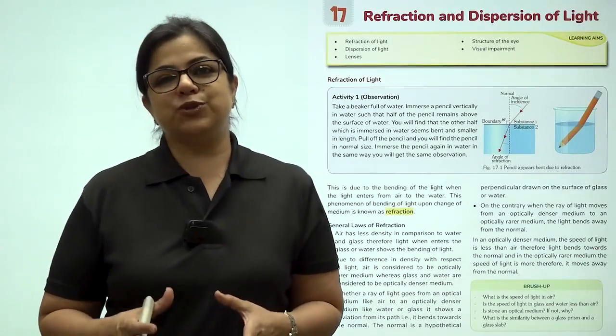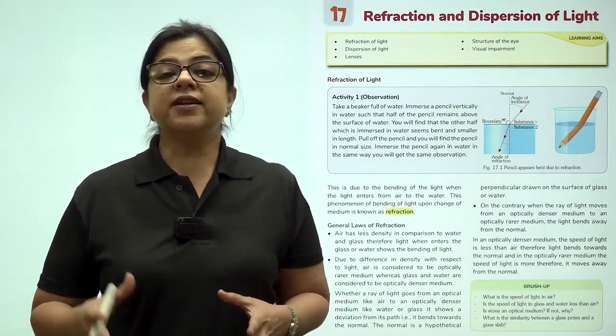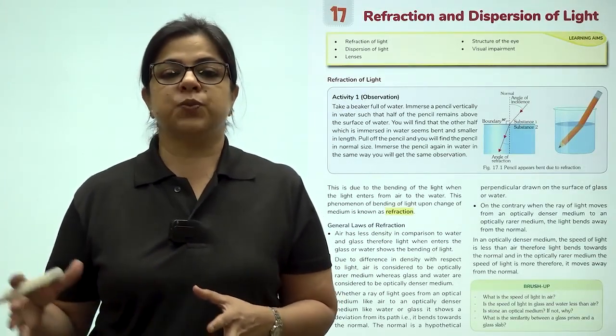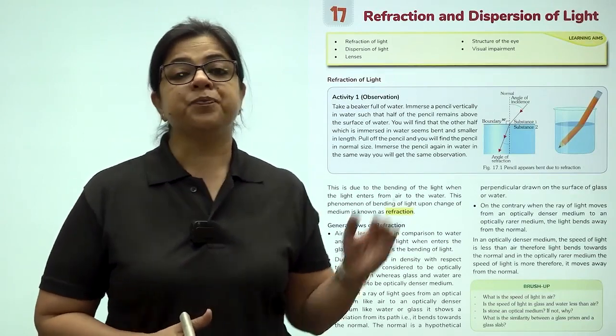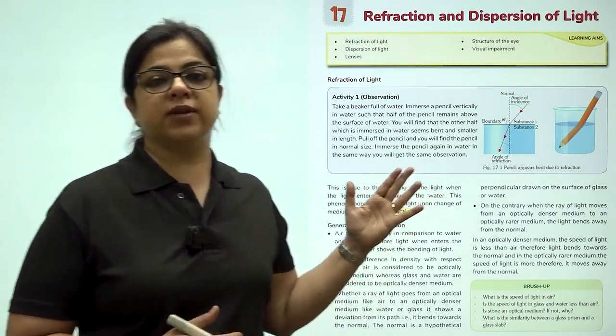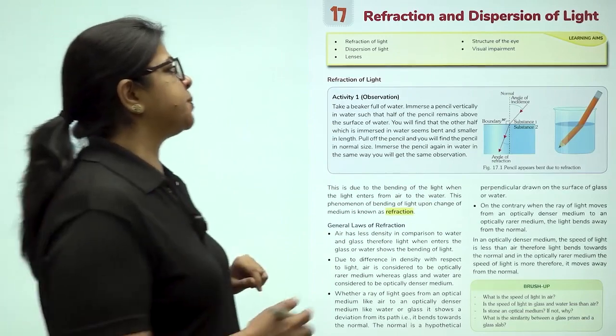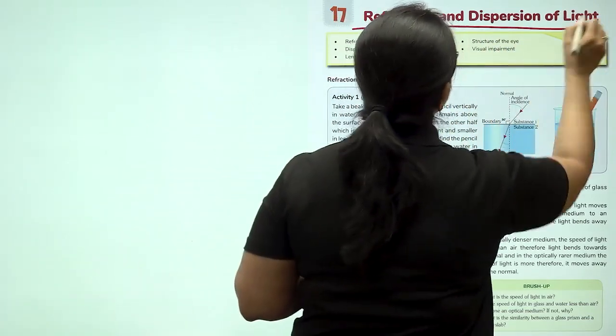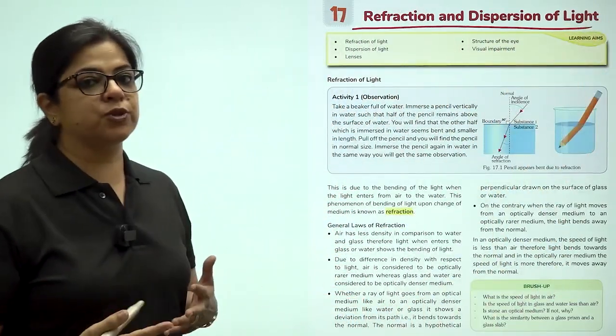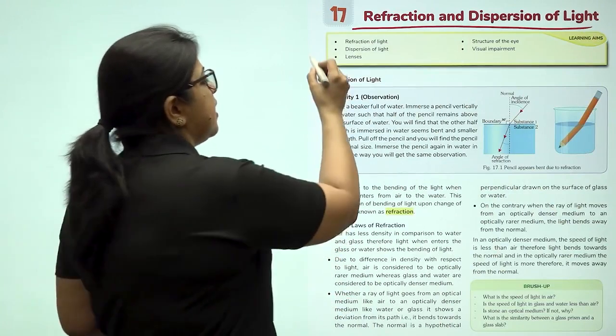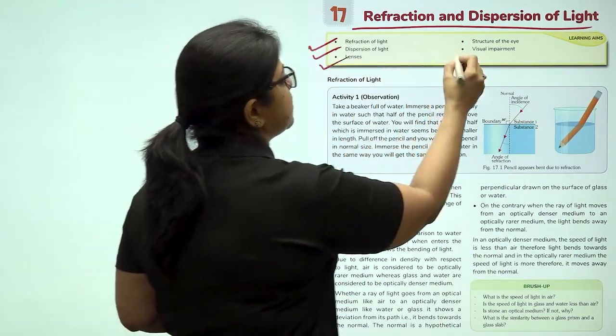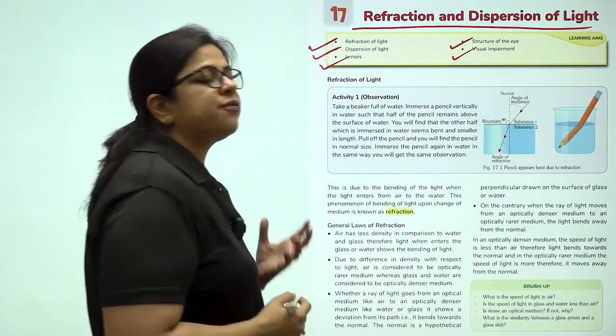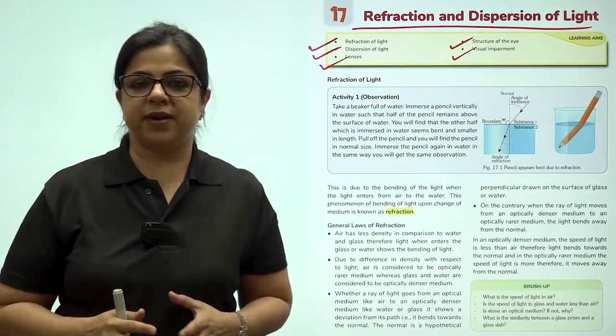Hello children and welcome to the session today. In continuation of what we learned in the previous session, we are going to talk more about light. In this chapter, chapter number 17, we will talk about refraction and dispersion of light. Along with this, we are going to talk about lenses, the structure of eye and visual impairment.